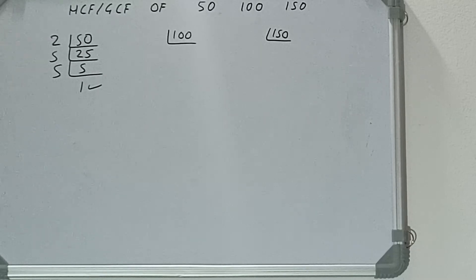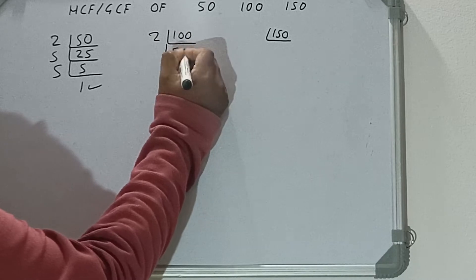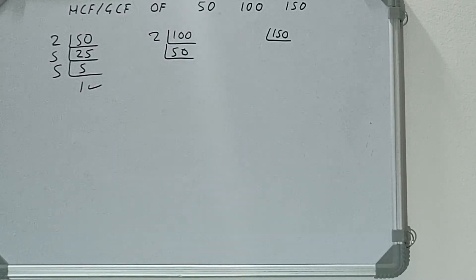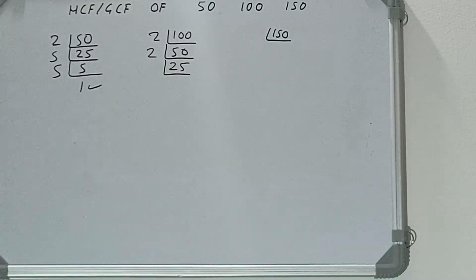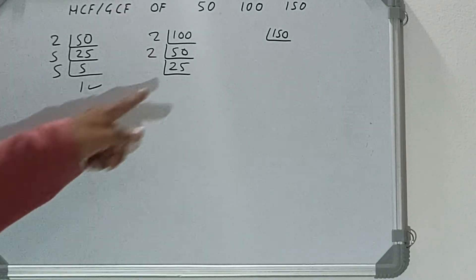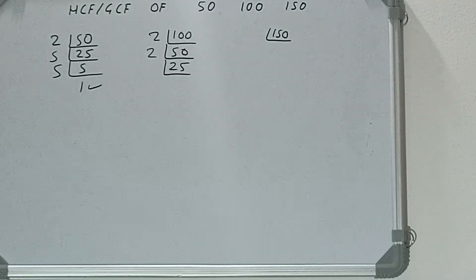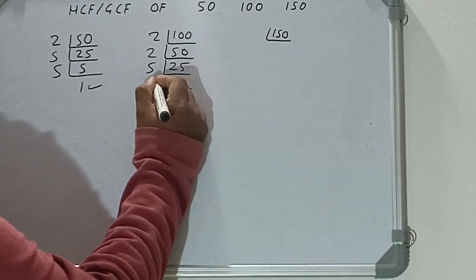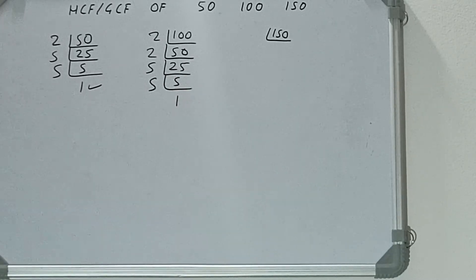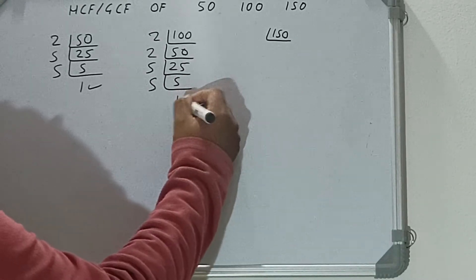Now we do the same with 100. Is 100 divisible by 2? Yes. Divide it and we get 50. Is 50 divisible by 2? Yes. Divide it and we get 25. Is 25 divisible by 2? No, it's odd. Check 3 — is 25 divisible by 3? No. Check 5 — is 25 divisible by 5? Yes. Divide it and we get 5. 5 is again divisible by 5, giving us 1. Once we get 1, we're done.